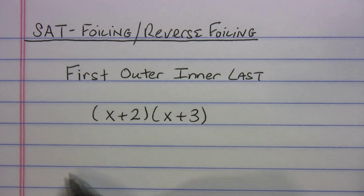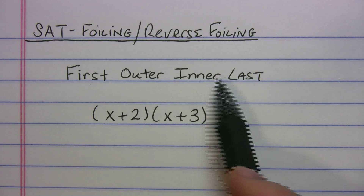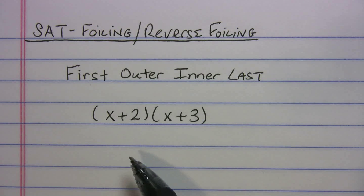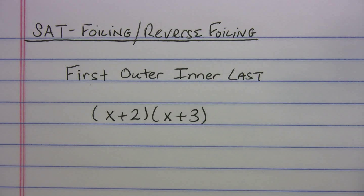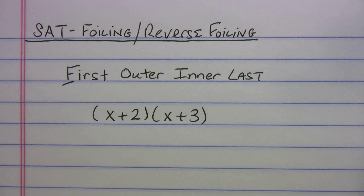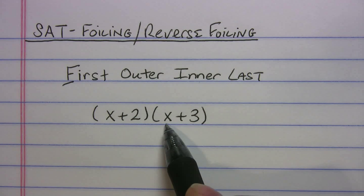First thing you've got to know is what FOIL stands for: First, Outer, Inner, Last. How do you apply that when you're multiplying two expressions such as (x + 2)(x + 3)? If you want to solve it, the first thing you do is multiply the first terms — the first one here is x and the first one here is x.